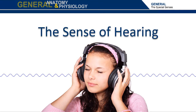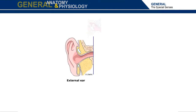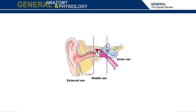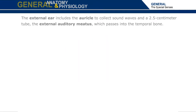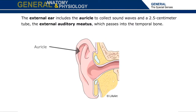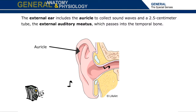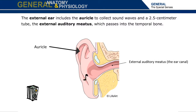The sense of hearing. The external, middle, and inner structures of the ear provide hearing and balance. The external ear includes the auricle to collect sound waves and a 2.5-centimeter tube, the external auditory meatus, which passes into the temporal bone.